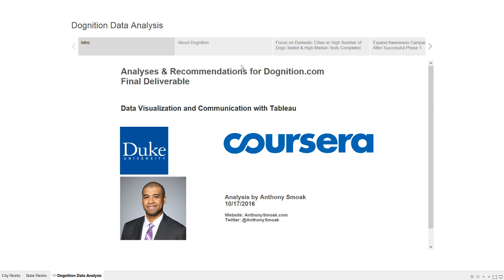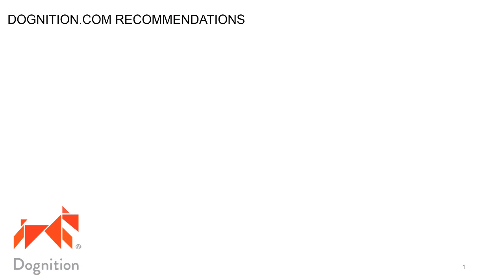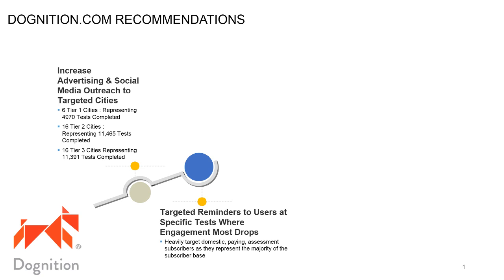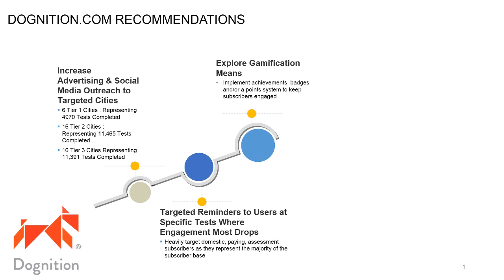My business process change recommendations for Dognition: first, I want them to increase their advertising and social media outreach to targeted cities — I have five different analyses for that. Second, I want targeted reminders to users at specific tests where engagement drops the most. Third, I want to explore gamification means to keep users engaged so they move through all 20 tests.